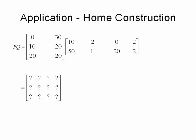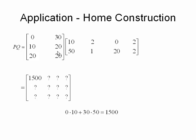I need to start finding these entries. Let's find what the first row first column is. That means I need to match the first row with the first column, the first row of the first matrix with the first column of the second matrix. So 0 times 10 plus 30 times 50, that gives me 1500. I put that in the first row first column.